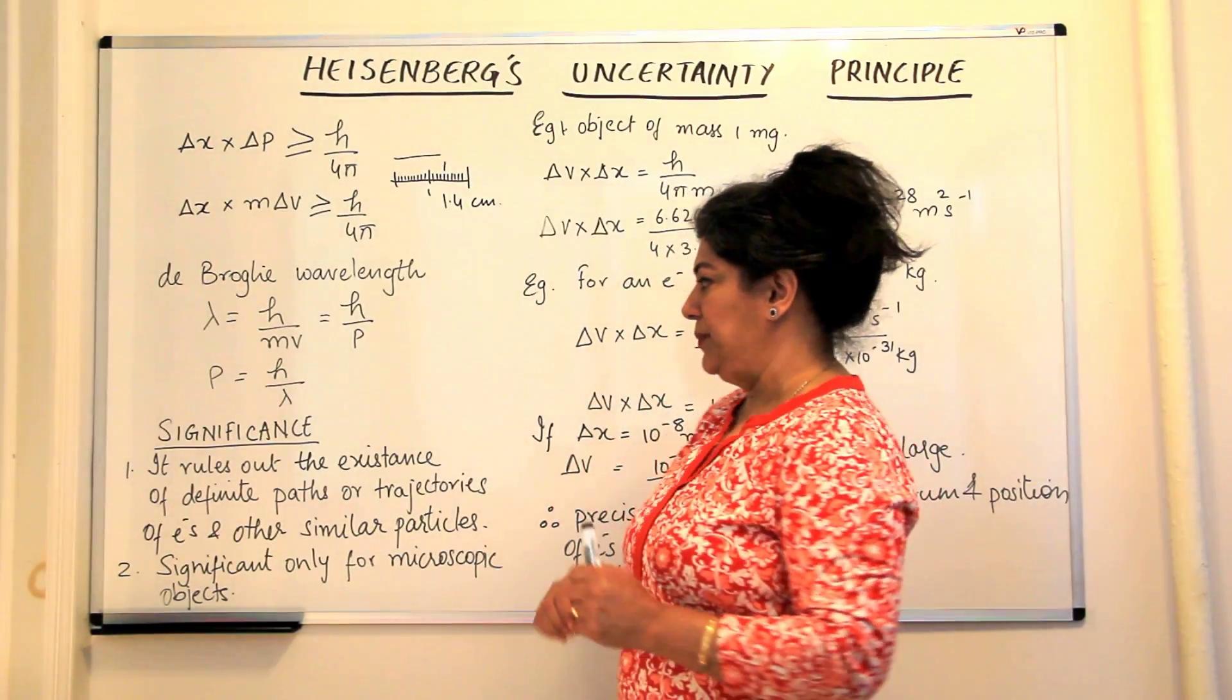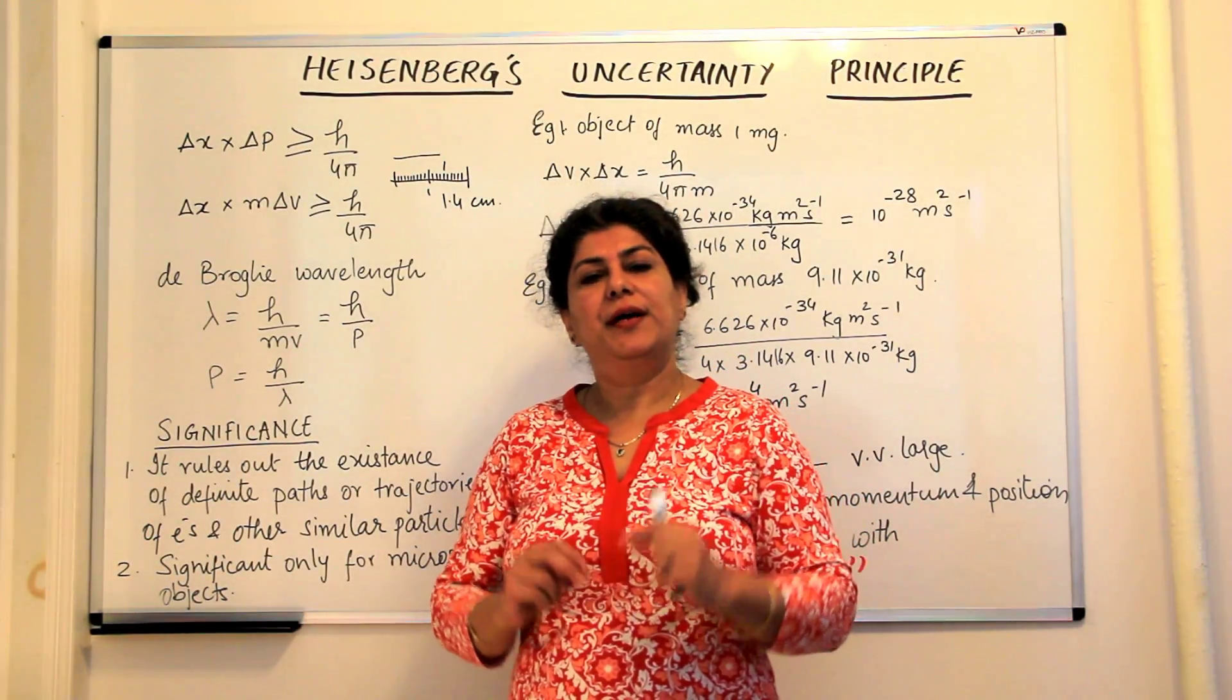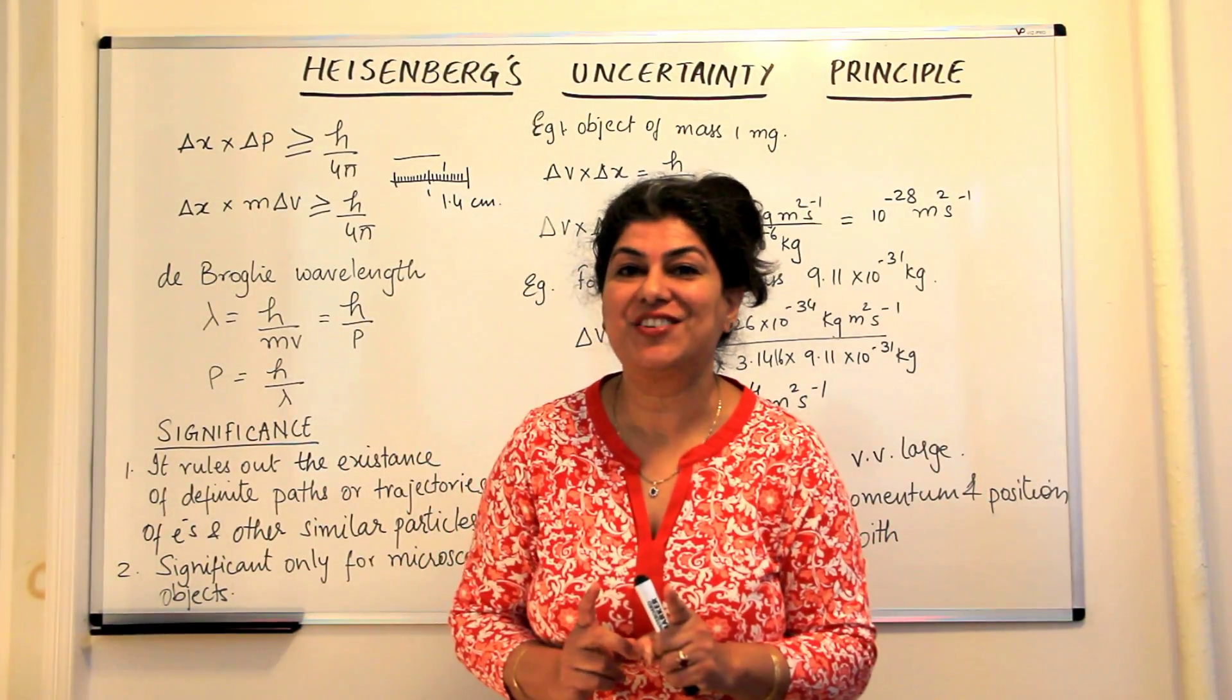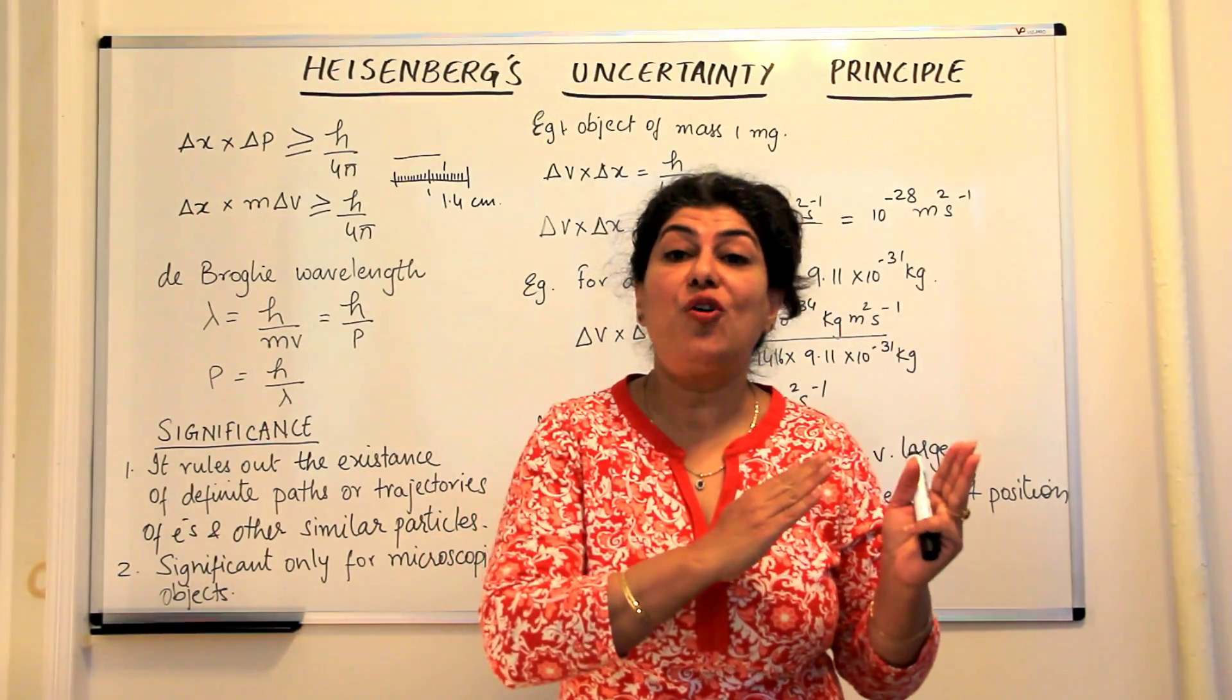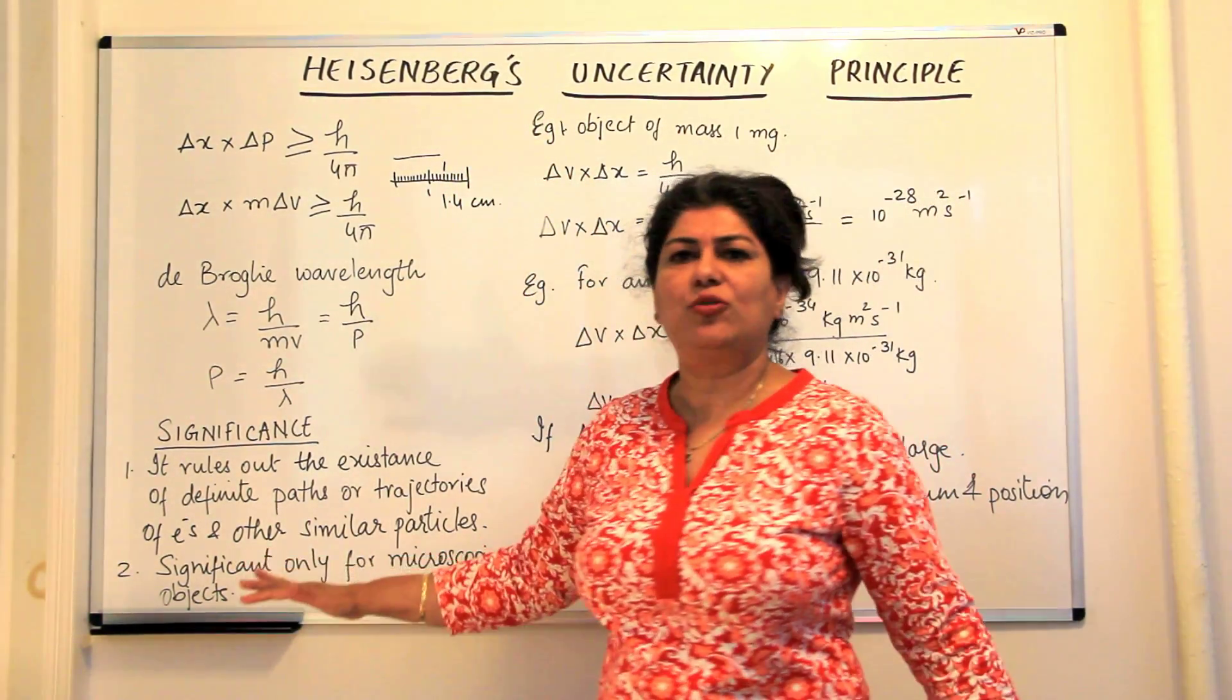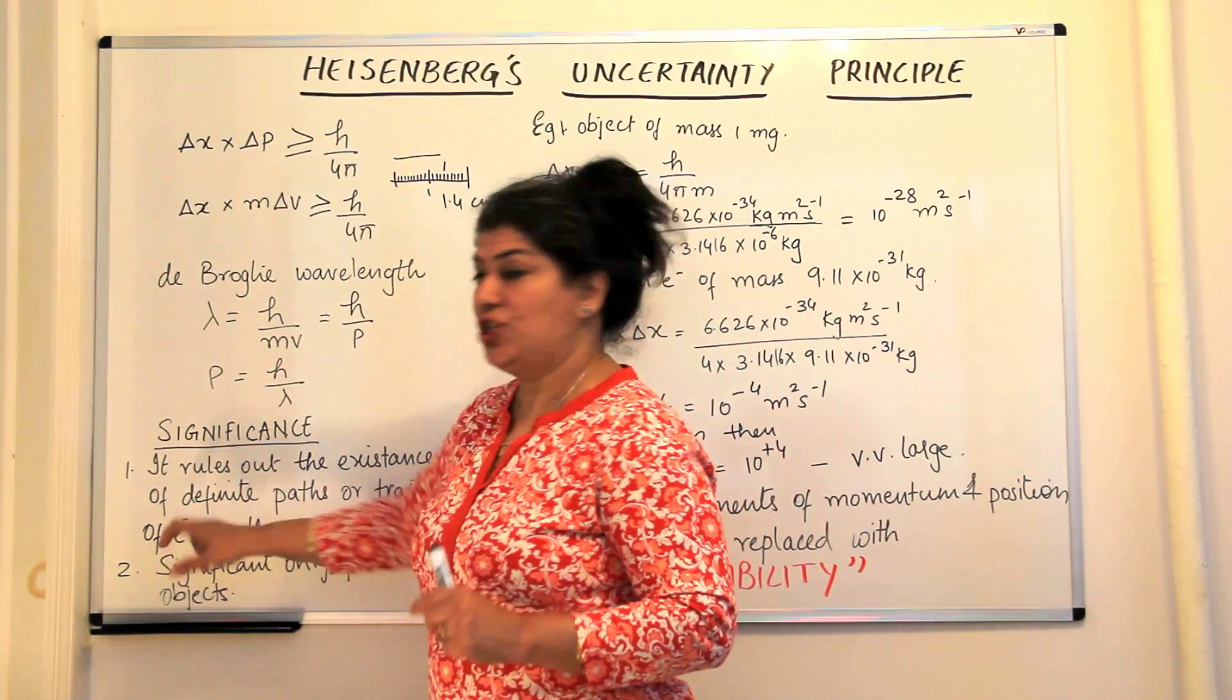What was the significance of this principle? If it is true that you cannot simultaneously find out the position and the momentum or the motion of an electron, then how did Bohr say that electrons are present in definite orbits? It's impossible to talk of them simultaneously. Either you know the electron is there or you know the trajectory. You cannot know both together because Bohr had not considered the fact that electron can also have wave-like nature. So the first significance is that Heisenberg's Uncertainty Principle totally rules out the existence of definite orbits or paths or trajectories that an electron may follow.